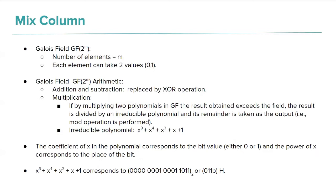The irreducible polynomial for AES is x^8 + x^4 + x^3 + x + 1. In bit form, the coefficient of each power of x corresponds to a bit value — 0 or 1 — and the power corresponds to the bit position. So x^8 + x^4 + x^3 + x + 1 corresponds to the hexadecimal value 0x011B.